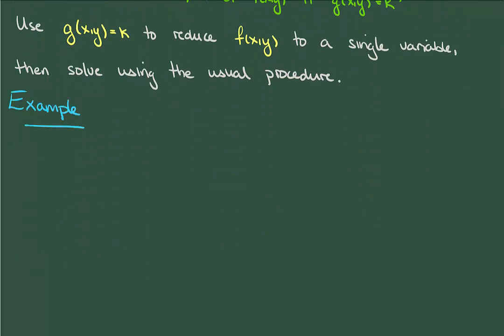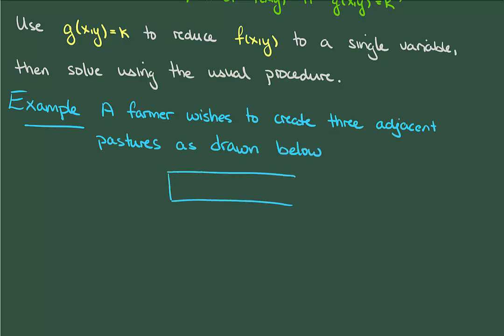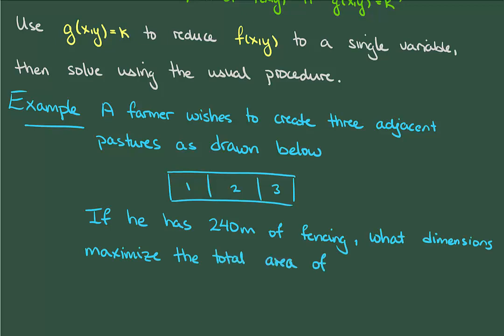The best way to see this is with an example. Let's suppose that a farmer is building three pastures immediately adjacent to one another and I'm going to draw them here so that you know what I'm talking about. However, he only has 240 meters of fencing with which to work. What should the dimensions of the pastures be in order to maximize the total area?